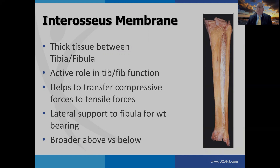The interosseous membrane travels between the tibia and the fibula. It's thick tissue — consider it much like the sail on a ship. As the wind hits the sail, it tensions or gets tight. Similarly, as you're bearing weight and going through dorsi and plantar flexion, as the fibula moves, it tensions the interosseous membrane. The interosseous membrane helps transfer compressive forces from the talocrural joint to tensile forces where they can be dissipated up through the lower leg.